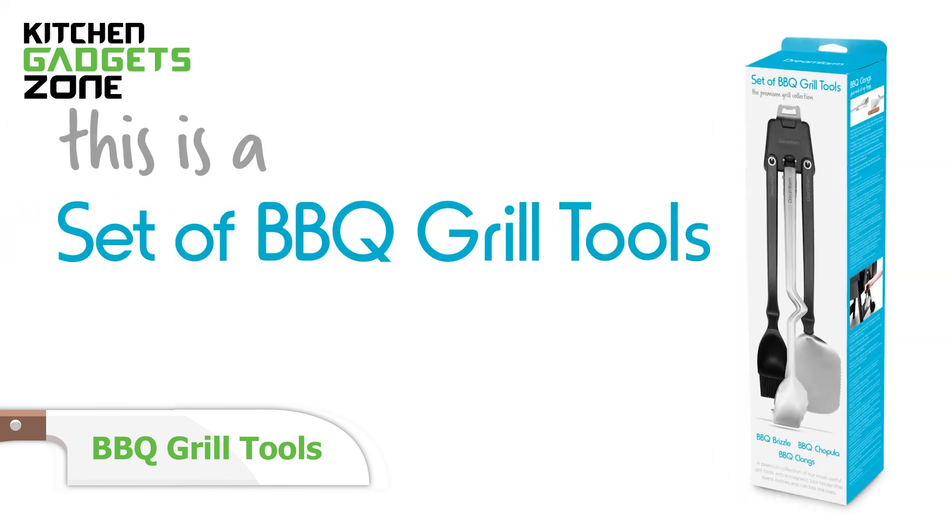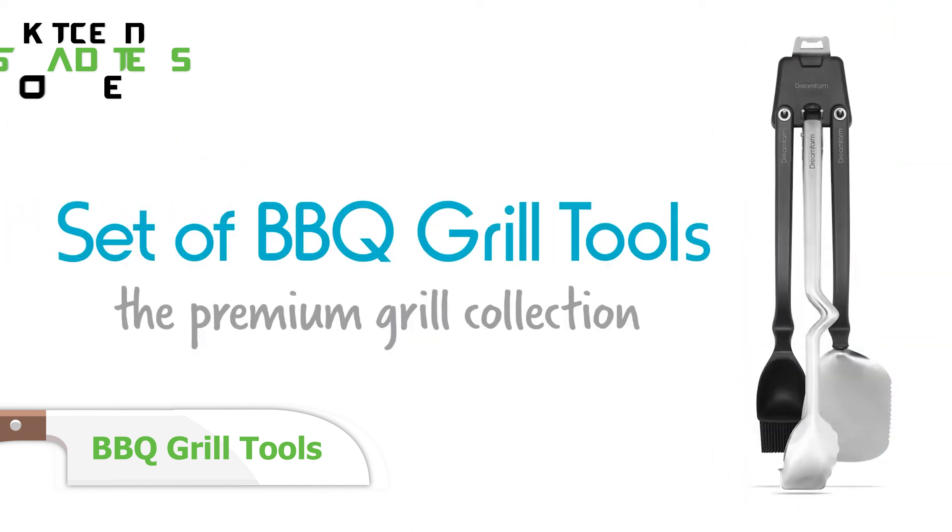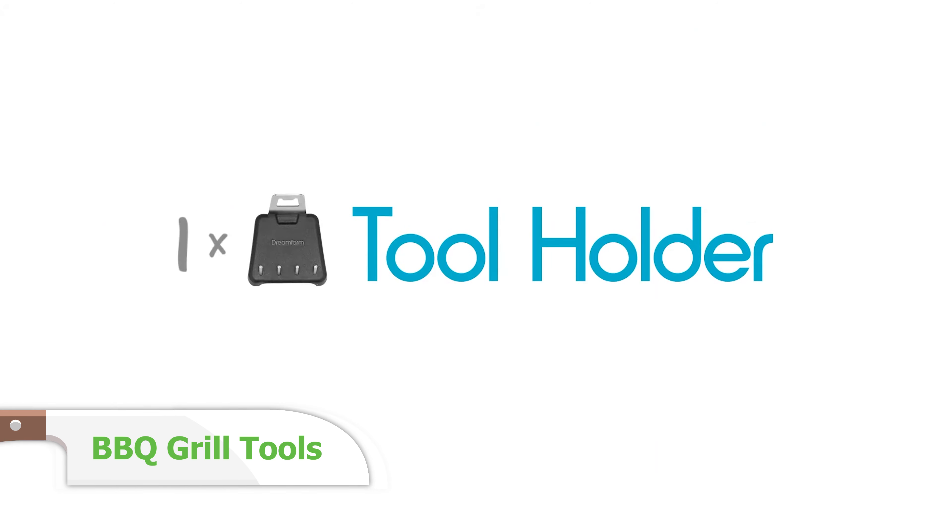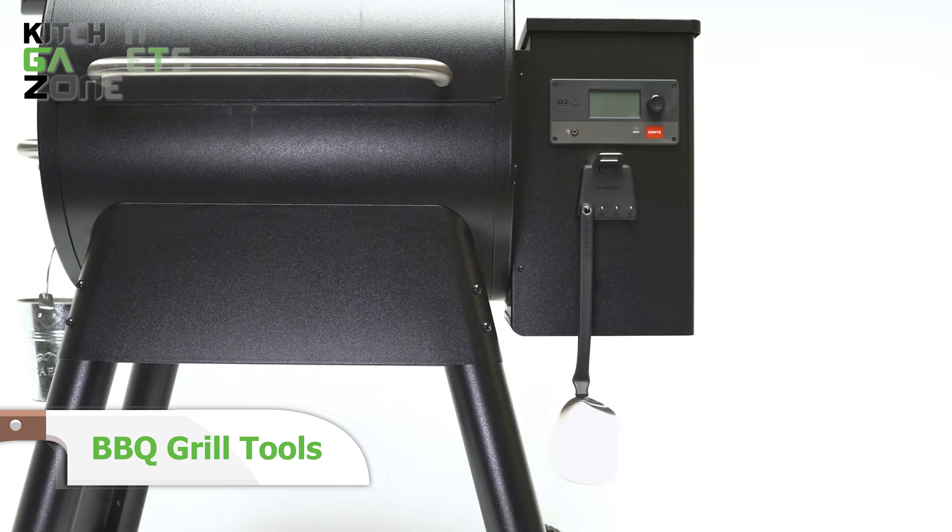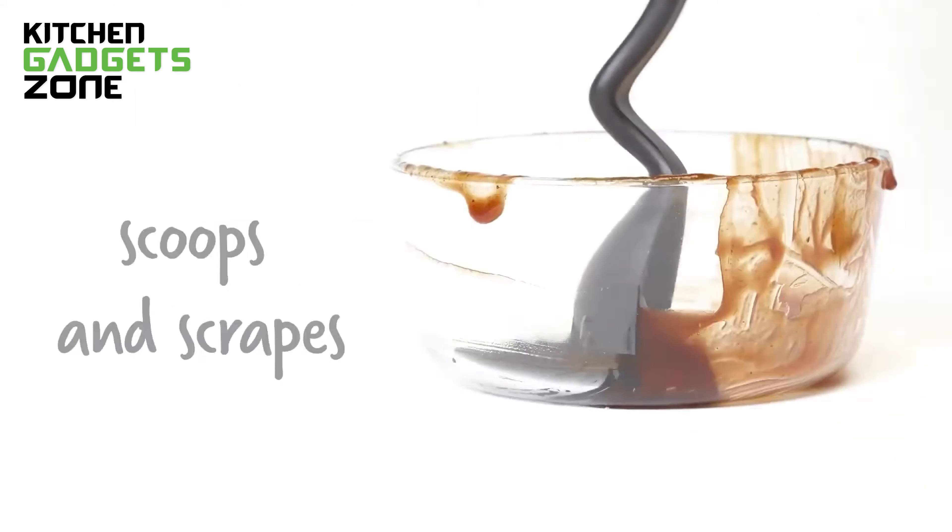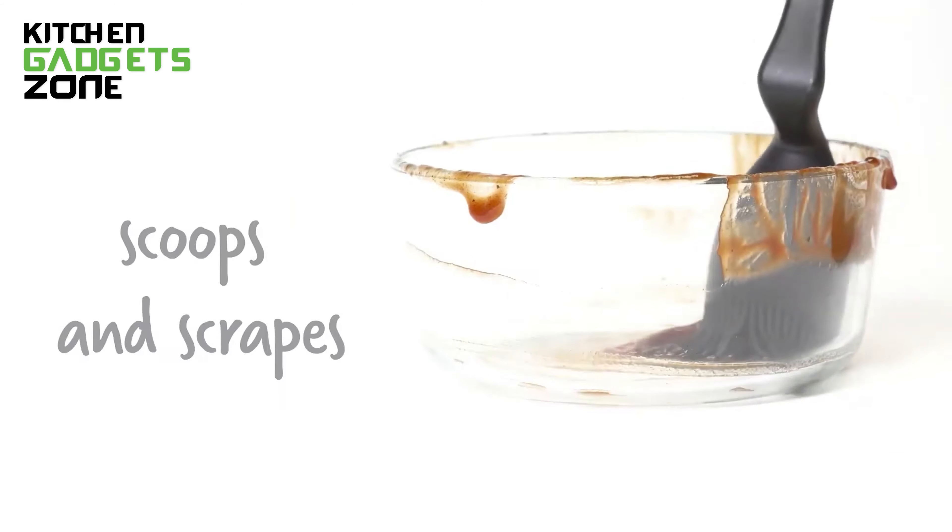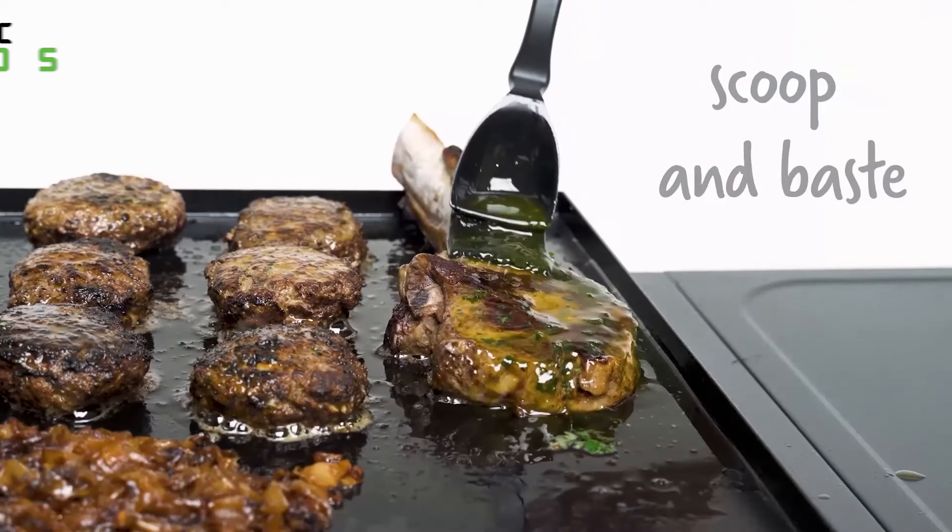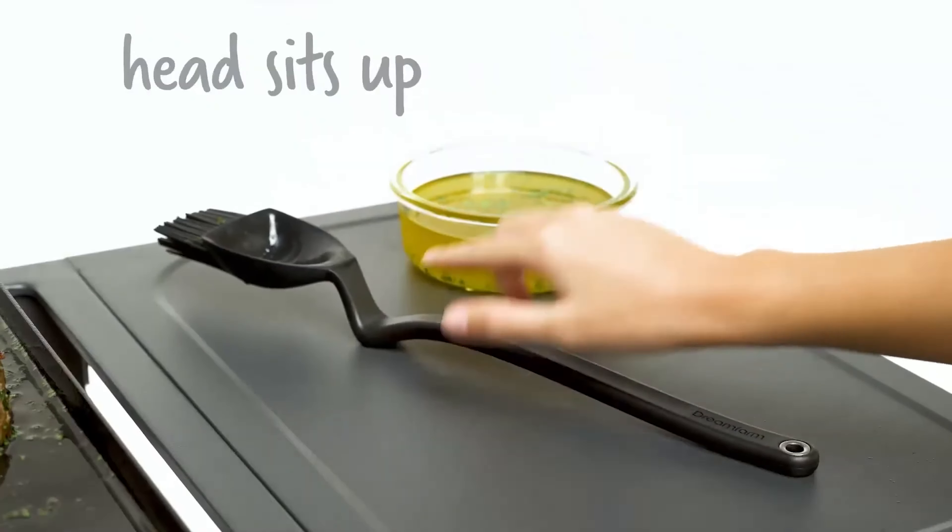Upgrade your BBQ game with this ultimate set of grill tools. The heavy-duty magnetic tool holder sticks right to your BBQ for convenient and space-saving storage, keeping your tongs, spatula, and basting brush within easy reach. The basting brush is made of silicone and scoops up sauce like a dream, drizzling it on or off the grill with precision.